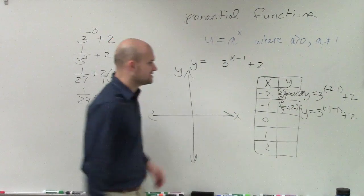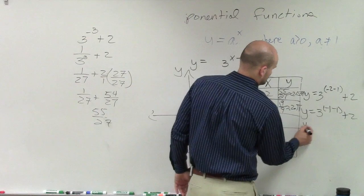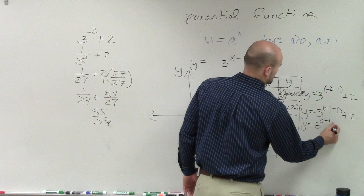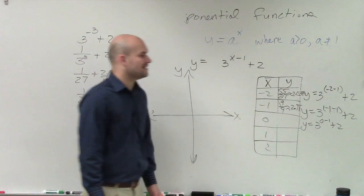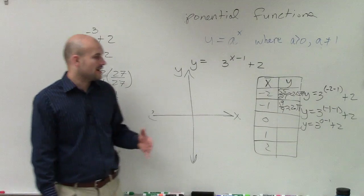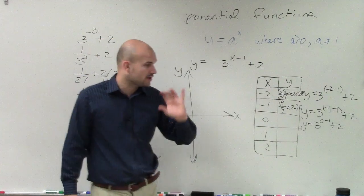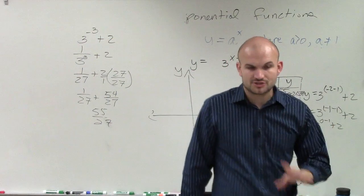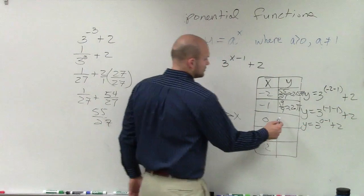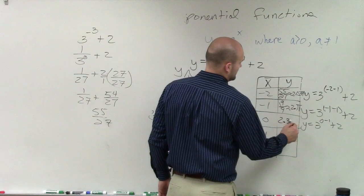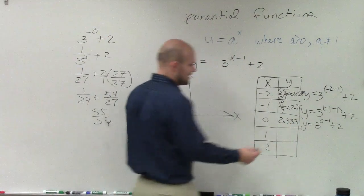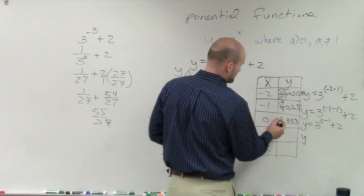And then, let's do 0. So I have 3 raised to the 0 minus 1, which is 3 to the negative first power. So 3 to the negative first power is 1 third. 1 third plus 2 is going to be 4 thirds, which is 2.333. Now, let's get to the easier answers.